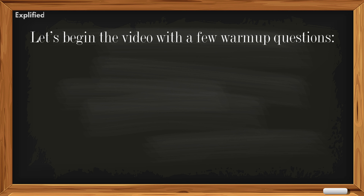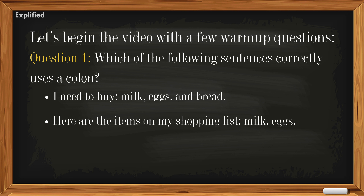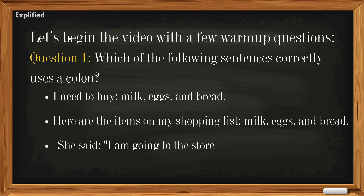Let's begin the video with a few warm-up questions. Question 1: Which of the following sentences correctly uses a colon? A) I need to buy milk, eggs, and bread. B) Here are the items on my shopping list: milk, eggs, and bread. C) She said, I am going to the store. D) He asked, Are you coming?